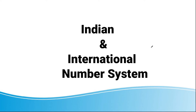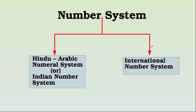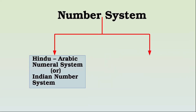Hello children, today we are going to see the Indian and international number system. The number system is classified into two types: one is the Hindu Arabic numeral system, otherwise called the Indian number system, and the other one is the international number system.